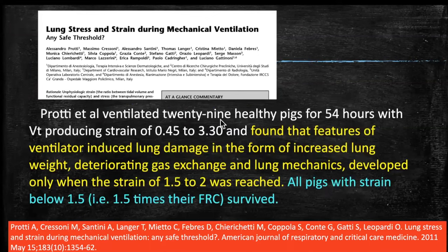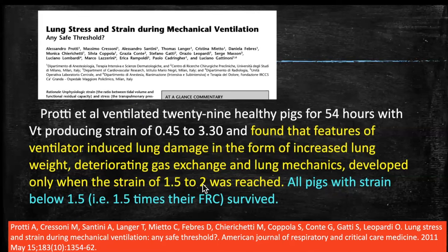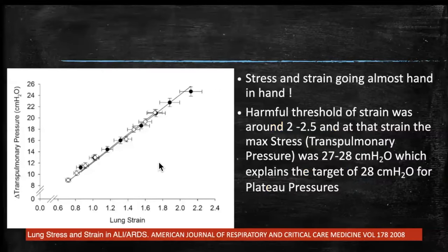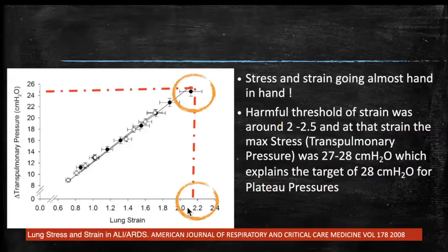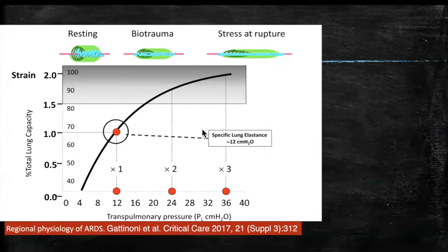Roti et al ventilated 29 healthy pigs for 54 hours producing strains of 0.45 to 3.3. Features of ventilator-induced lung injury — increased lung weight, deteriorating gas exchange, and lung mechanics — developed only when strain exceeded 1.5 to 2. All pigs with strain below 1.5 survived. In the 2008 Chimula article, a linear relationship between strain and stress was found: strain around 2 to 2.2 corresponded to a stress of around 25 to 26 centimeters of water.